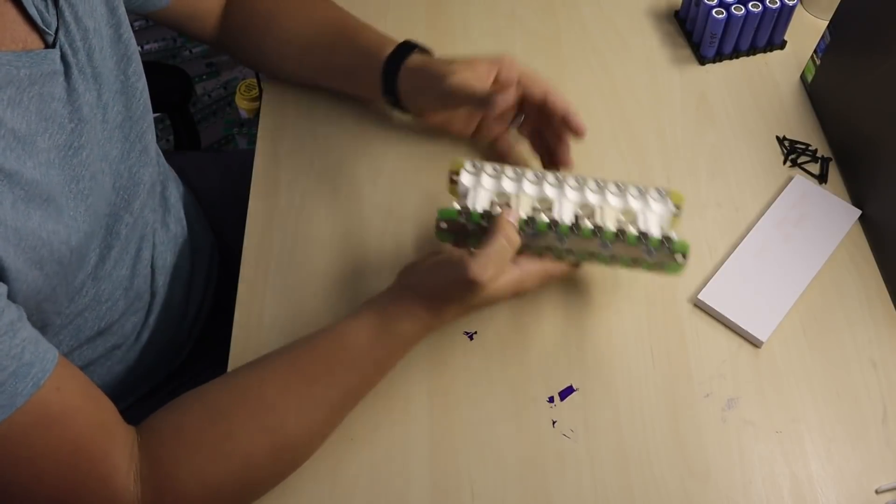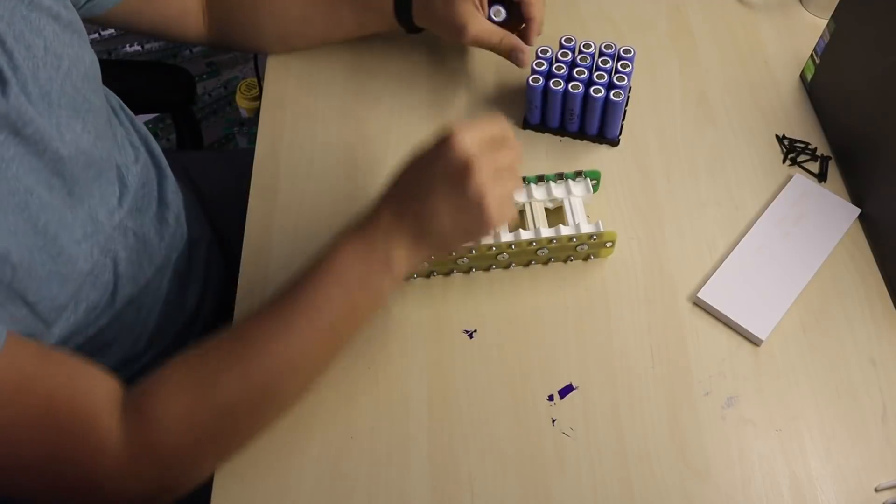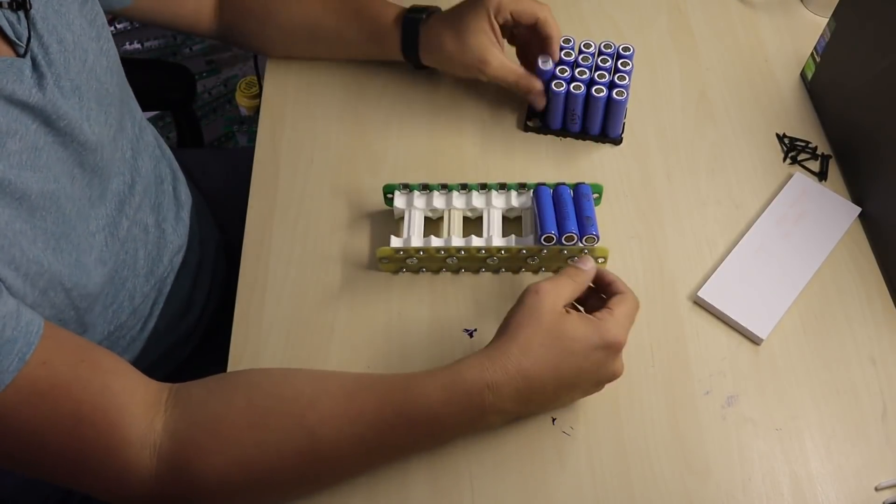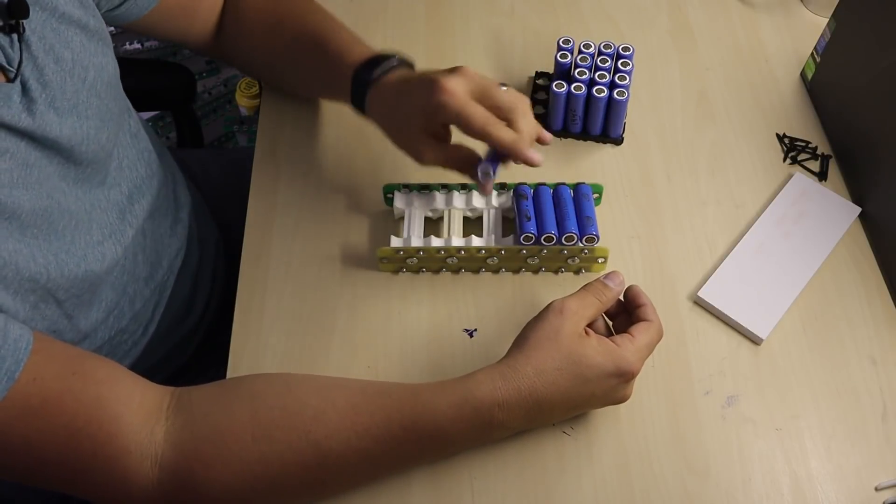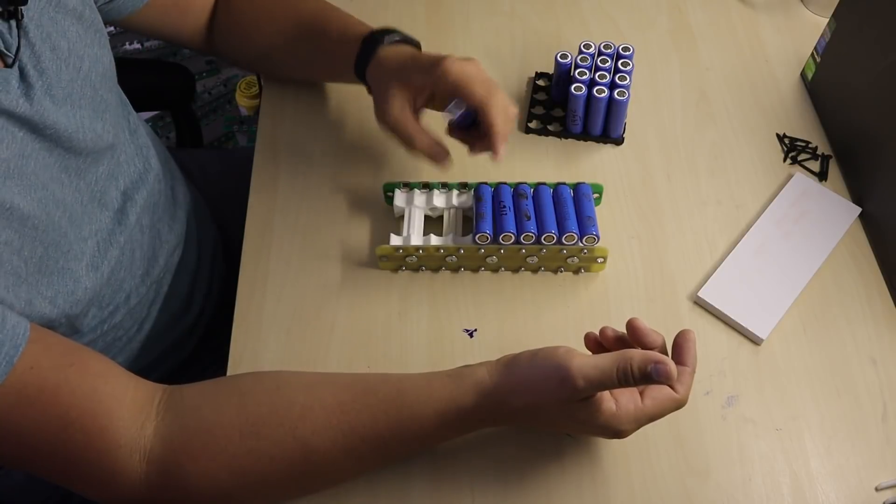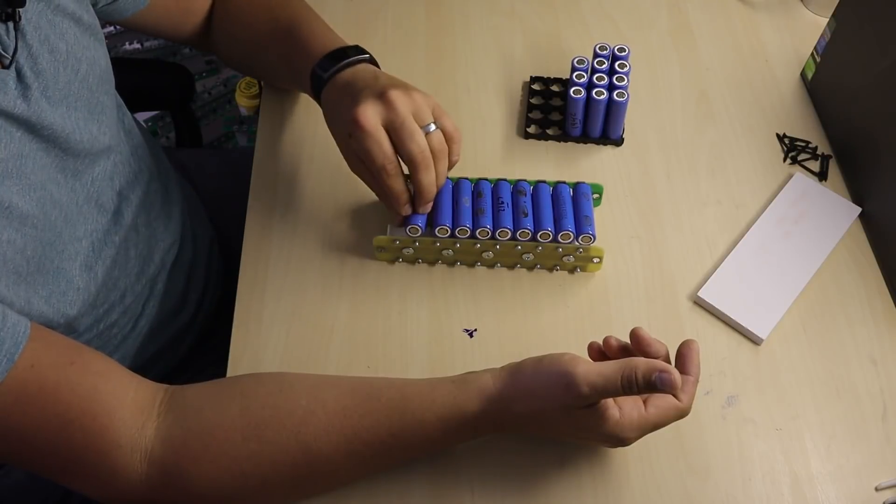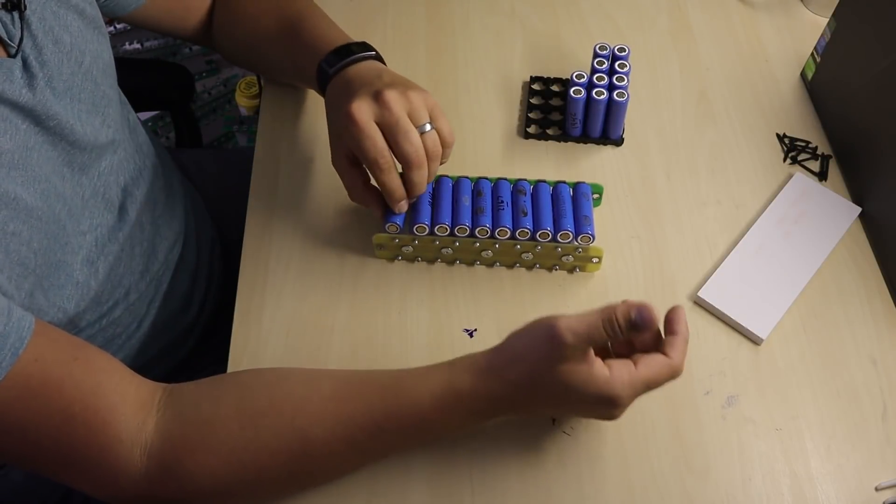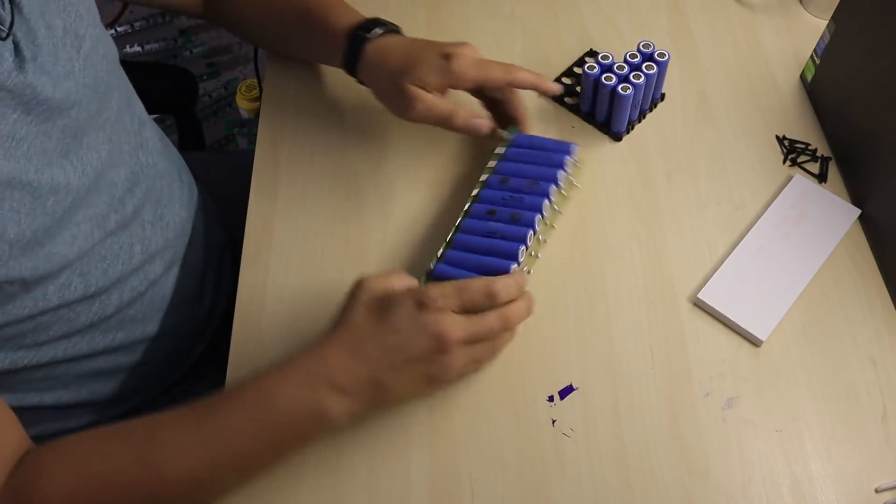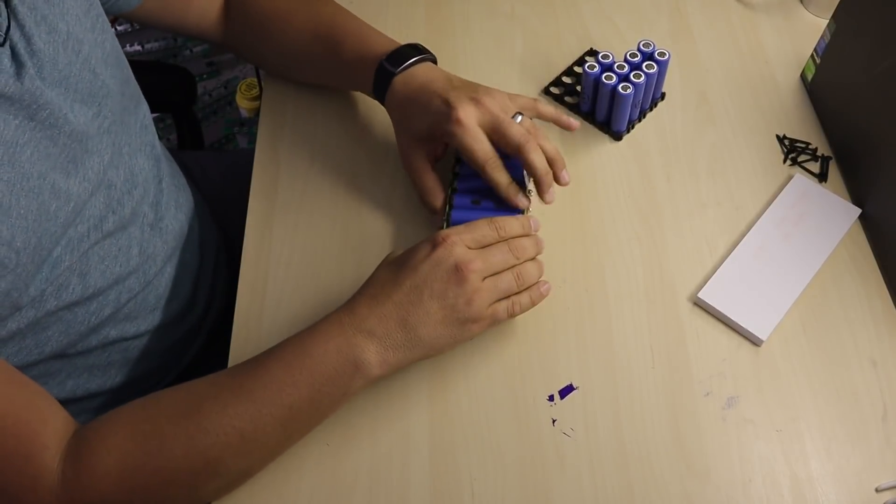Now all you have to do is take your batteries. This is something I heard, that some of you are shorting the batteries because you don't pay attention to the way you're putting them together. Now all you have to do is place them one next to the other one, make sure they are facing the right direction, and then start pushing them down just like that.